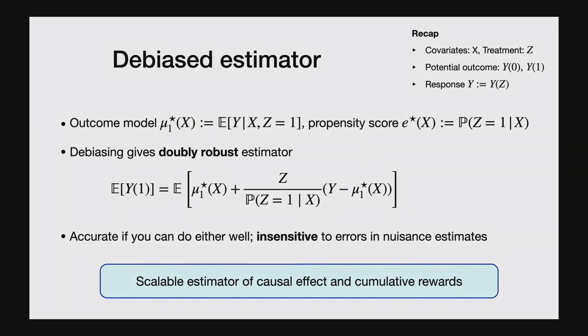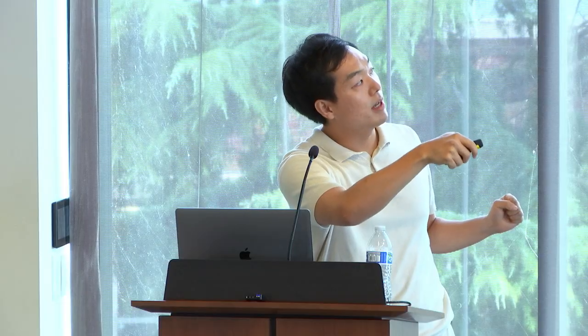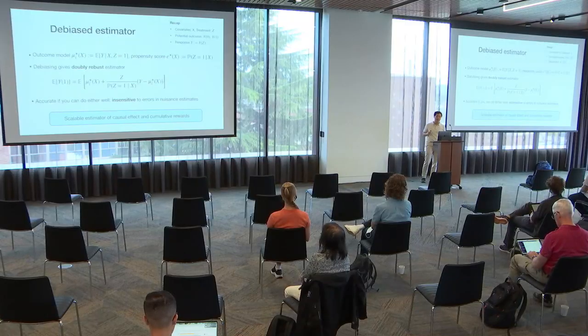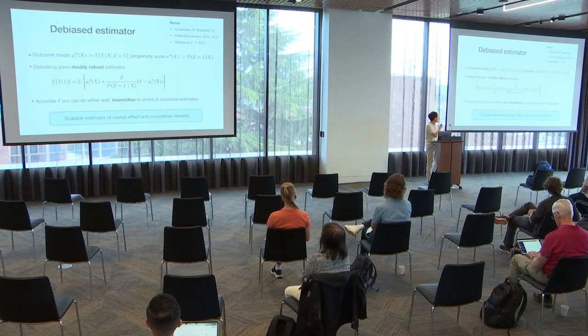This formula from the first-order Taylor expansion combines the best of both worlds: it's accurate as long as I can predict outcomes well or estimate the propensity scores well. By virtue of the debiasing idea, it's actually insensitive to errors in these nuisance estimates — these infinite-dimensional quantities. I usually fit these using ML-based methods, and they tend to be fairly unstable on parts of the covariate space. The great thing about this estimator is that it's somewhat insensitive to any errors those ML-based estimators might have. This will be the main mode of causal analysis I extend today.